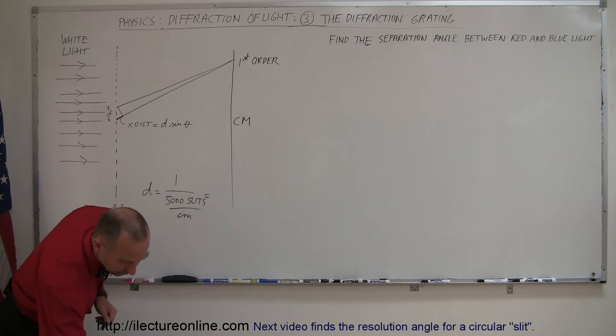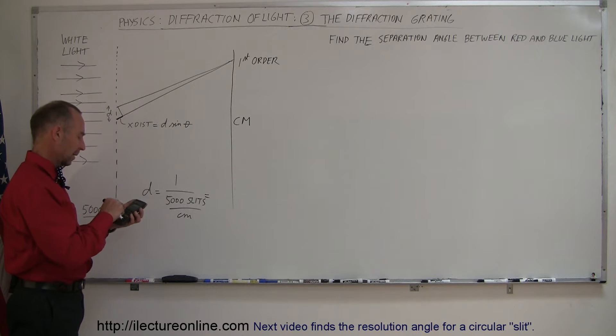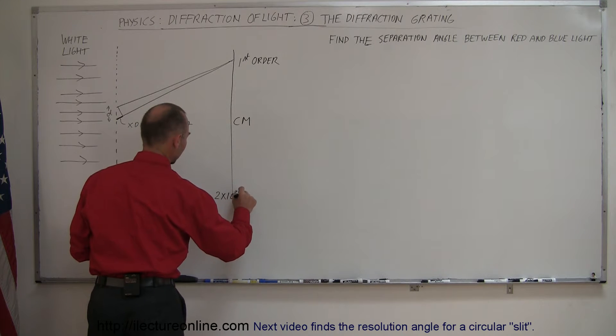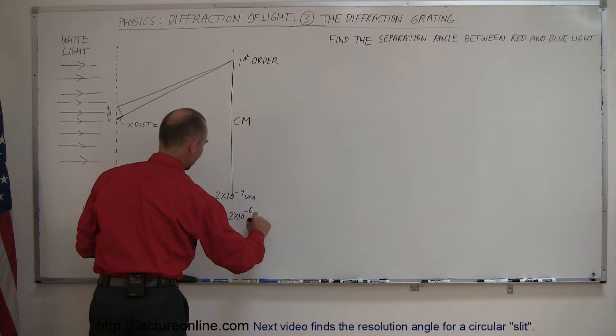And we get, take 5,000, take the inverse of that, that's 2 times 10 to the minus 4, so 2 times 10 to the minus 4 centimeters, which is equal to 2 times 10 to the minus 6 meters, which is 2 micrometers.